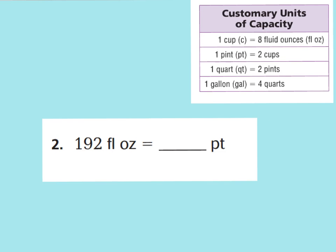Let's take a look at question number two. It says 192 fluid ounces equals how many pints? So we want to look at our customary units of capacity chart to see how many ounces are in one pint. We can see that one cup equals eight fluid ounces, and one pint equals two cups. But there's nowhere here that says how many ounces equals one pint, so we have to use this chart to help us figure that out.